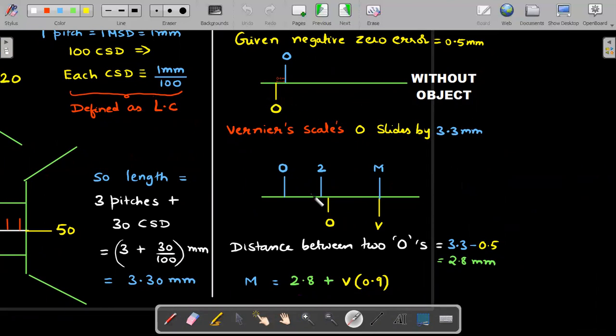Now when the object is placed and the object was 3.3mm, I think this vernier scale zero will slide towards right by 3.3mm. That's the basic concept. Whatever is the length of the object in both the instruments, that's the distance moved by the scale along that main scale. This should be 3.3. That means zero has now moved by 3.3. Now what would be the distance between the two zeros? Already this was 0.5, moves by 3.3, so the new distance would be 2.8. Distance between two zeros in the new picture would be 2.8.